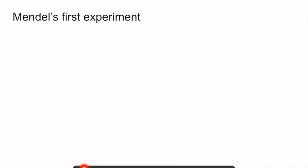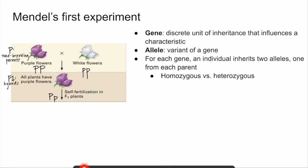At the core of his model of inheritance, Mendel posited that characteristics are controlled by heritable discrete units. At the time he called these discrete units factors, but we now know them today as genes. A gene is a discrete, heritable unit of inheritance that influences a characteristic. For example, in this specific experiment, the gene being studied is the flower color gene, which determines the flower color.